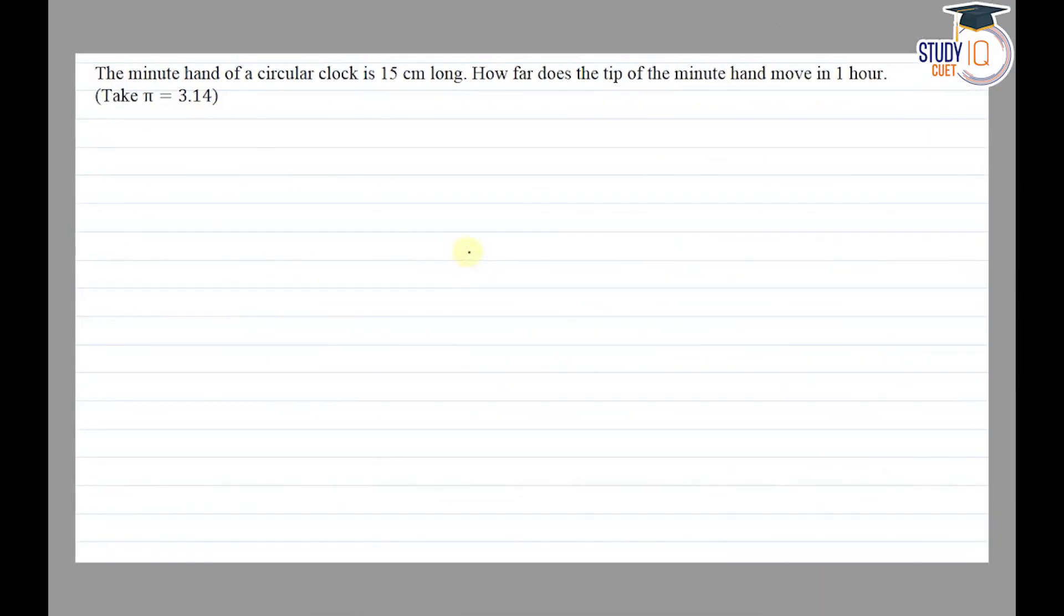Hello everyone. This question appears in Class 7th NCERT chapter of Perimeter and Area. This is the 17th question of exercise 11.3. The question says: the minute hand of a circular clock is 15 centimeters long. How far does the tip of the minute hand move in one hour?